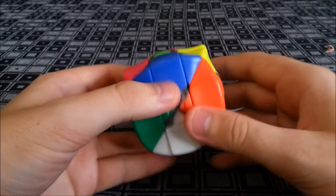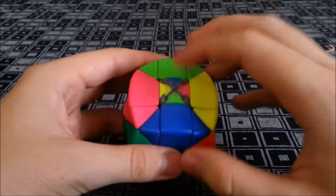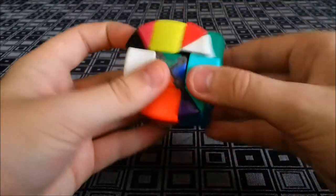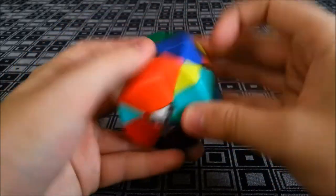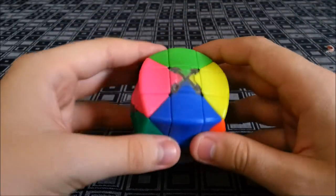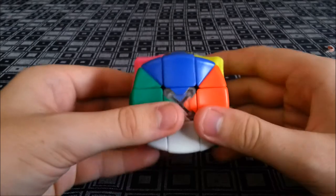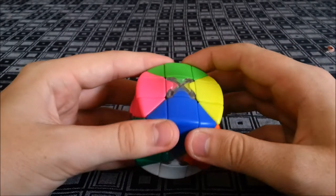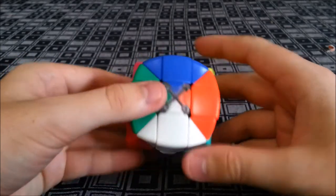As you're solving, you can get parity cases like this which can be solved with a normal double t-perm, but it gets a little annoying with things like recognition.